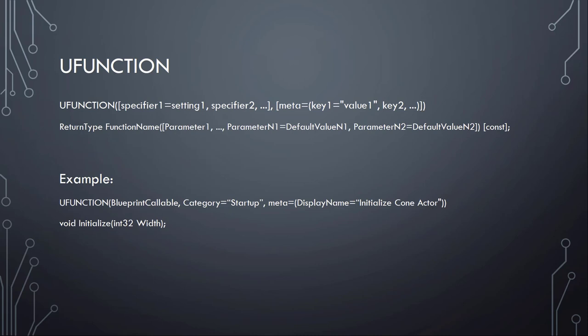UFunctions - what are they? UFunctions are a bridge between C++ and Blueprints. They allow Blueprints to access UFunctions, or even C++ code to call Blueprint functions. Similar to UProperties, they have specifiers and meta tags. In this example we define a UFUNCTION macro with specifiers and meta tags - in this case BlueprintCallable, category Startup, and a display name of Initialize Cone Actor - while the function itself is just called void Initialize. If we don't define a display name meta tag, the function name is used.